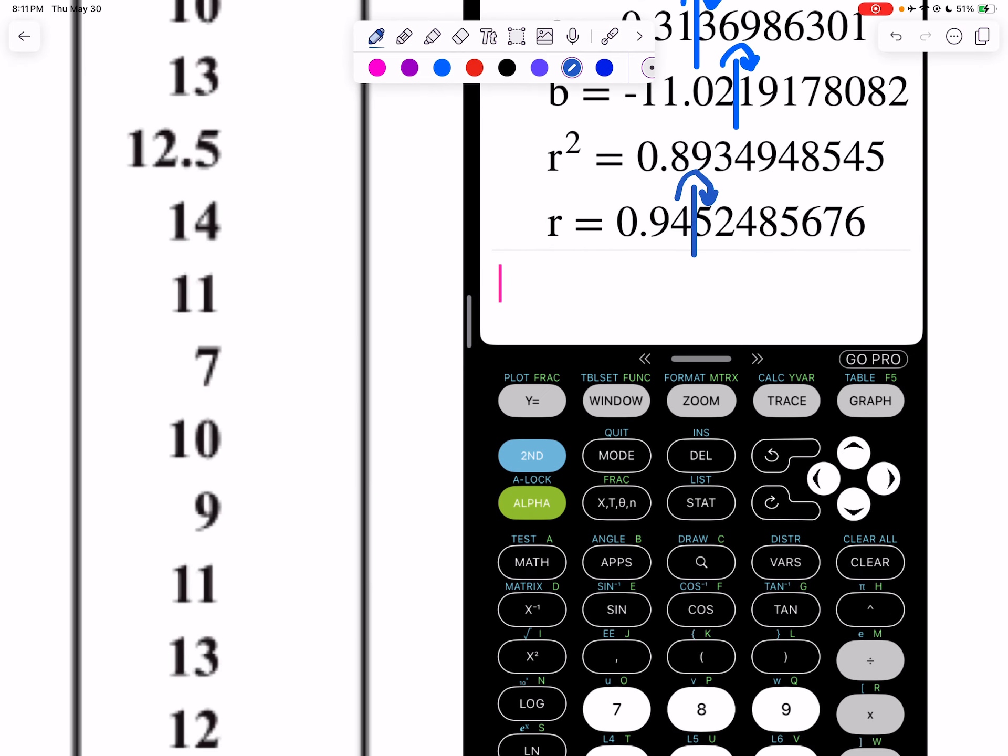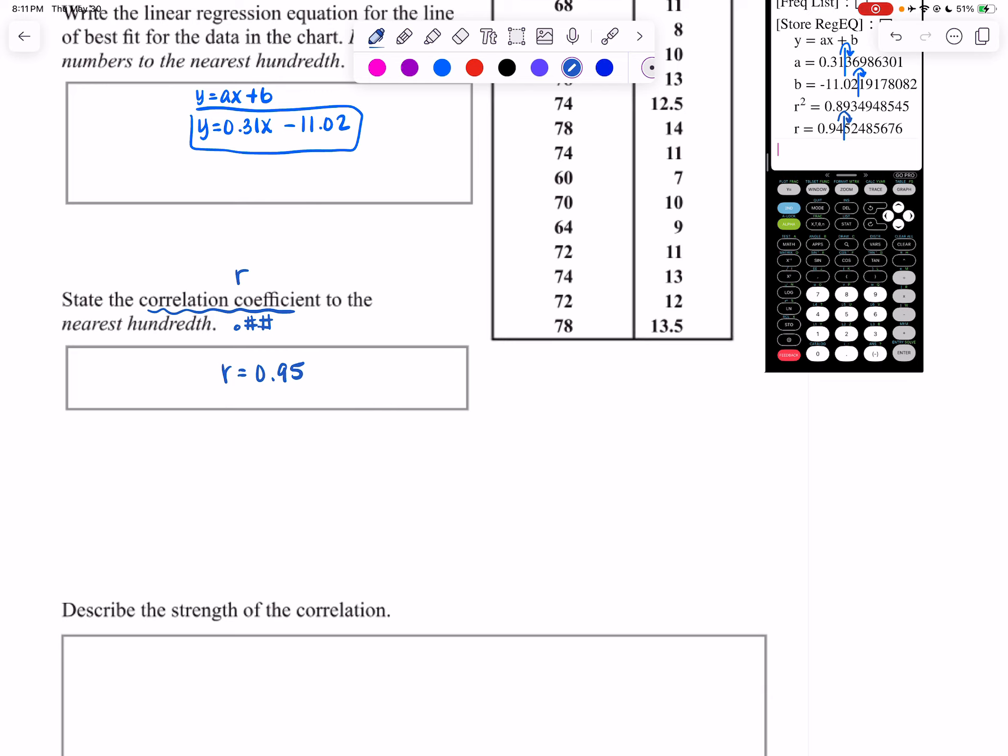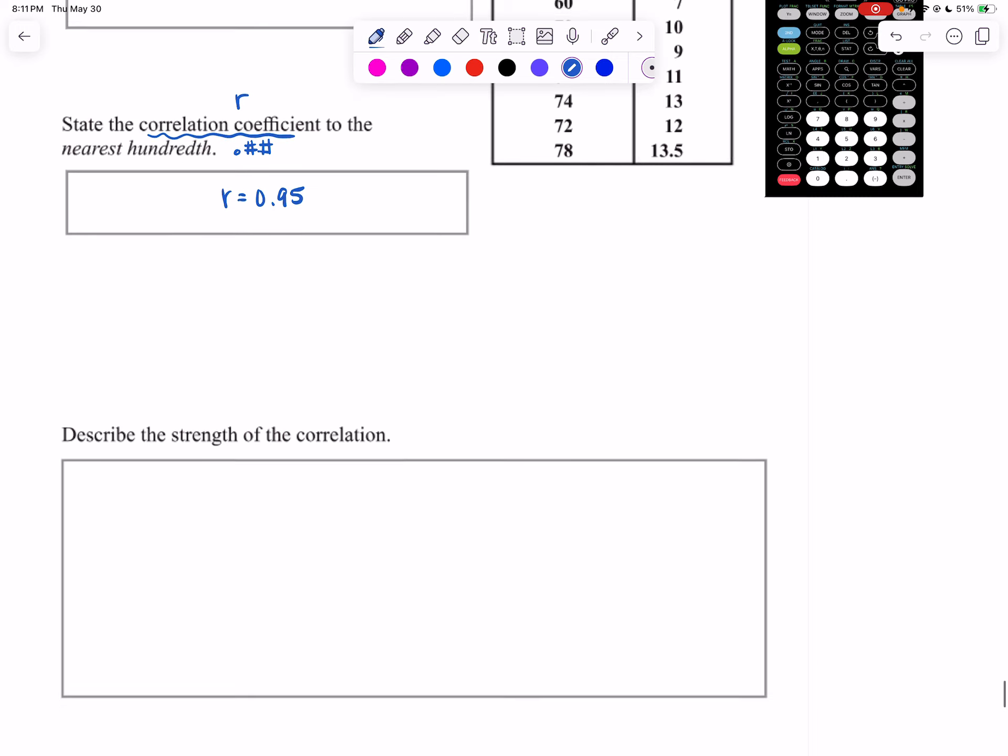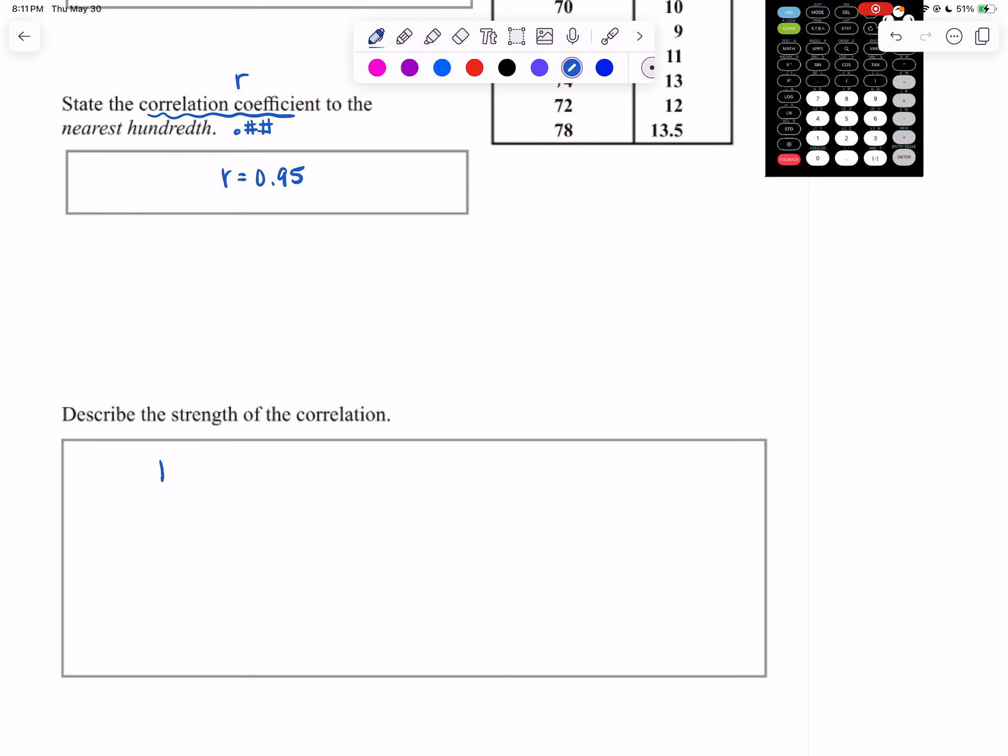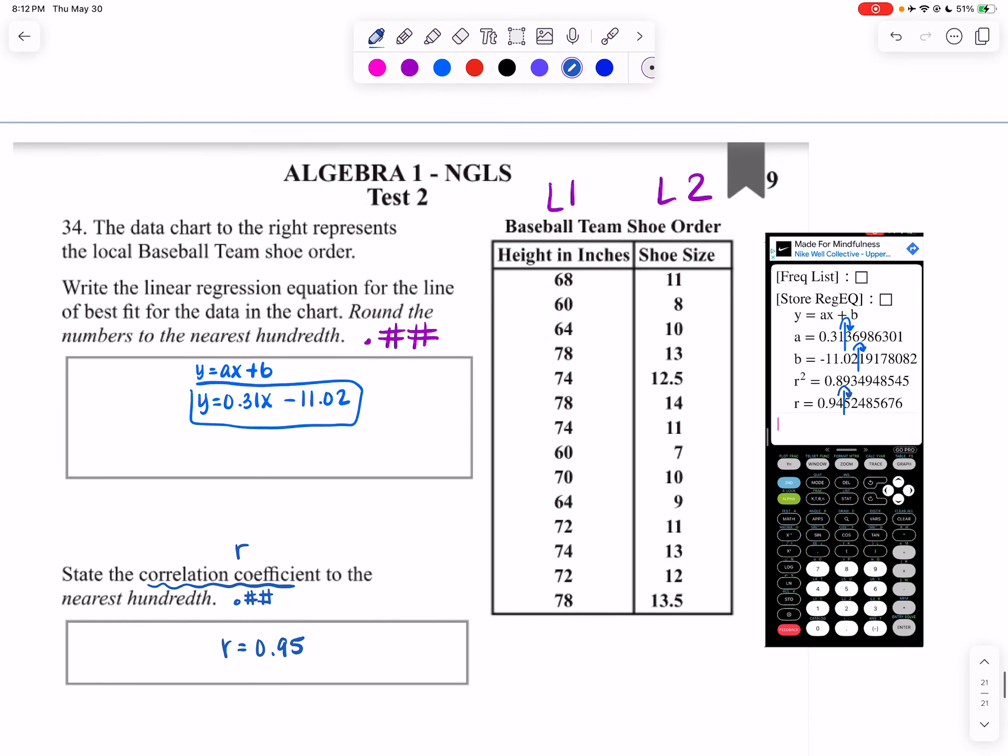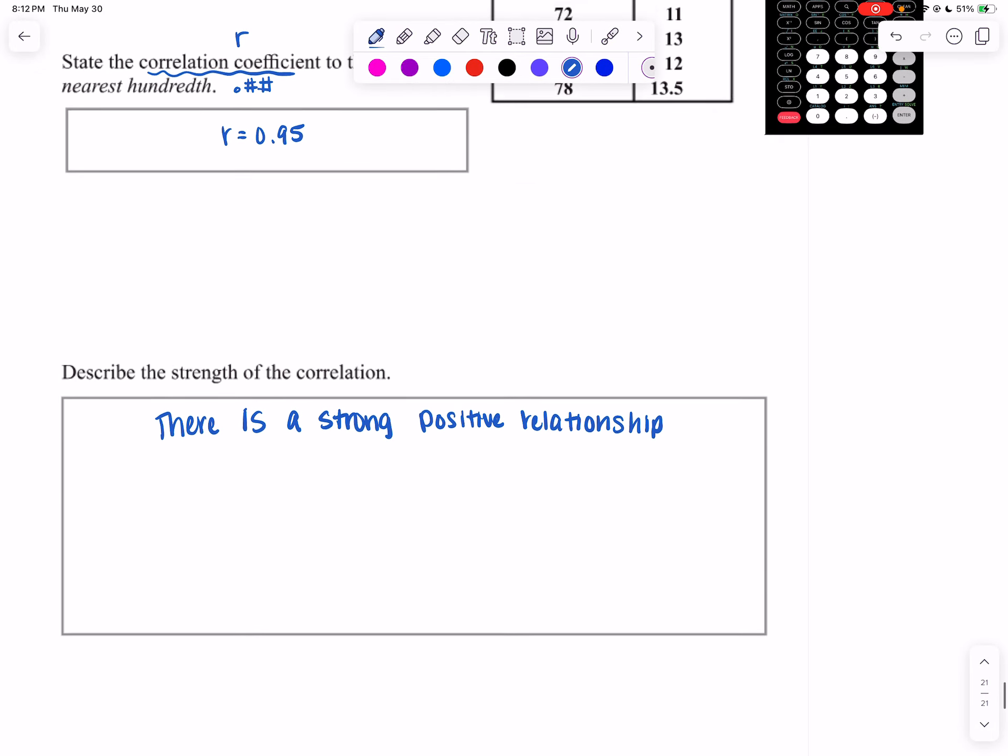Now, when it says describe the strength of the correlation, we have to look at that r value. So that r value is close to positive one. So what that means is there is going to be a strong positive relationship between height in inches and shoe size.